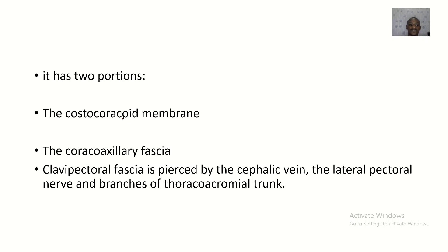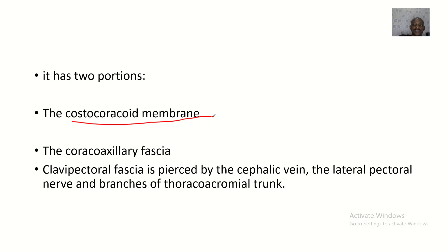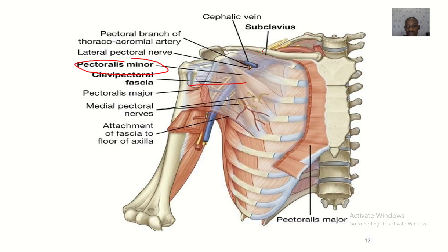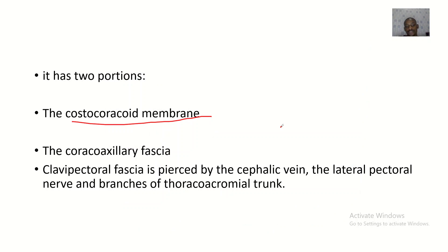The first portion is the costocoracoid membrane. There is a logical way of reasoning out anatomy — if you hear 'costocoracoid,' that comes from the ribs, which are the costal bones, to the coracoid process of the scapula. So the costocoracoid region is up here.